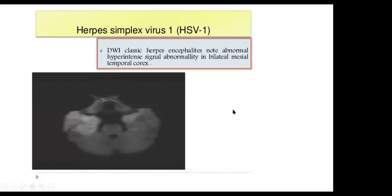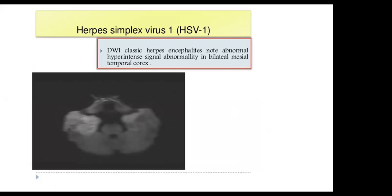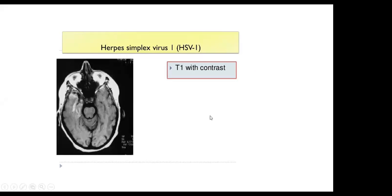Another case — classic herpes encephalitis on diffusion-weighted image shows abnormal hyperintense signal in bilateral mesial temporal cortex. The area may show contrast enhancement. T1 with contrast shows right temporal lobe enhancement.